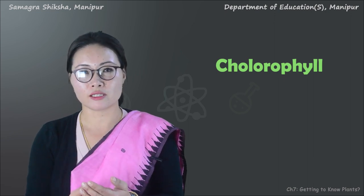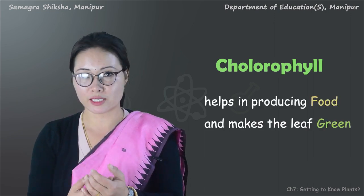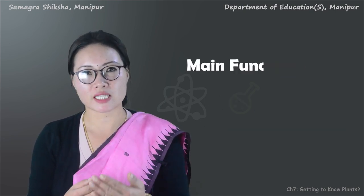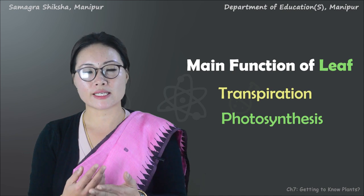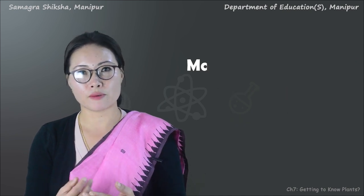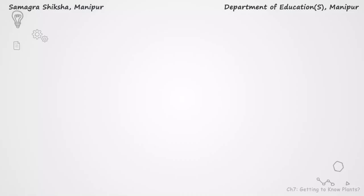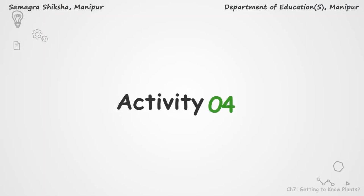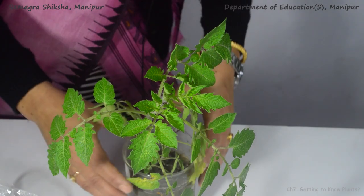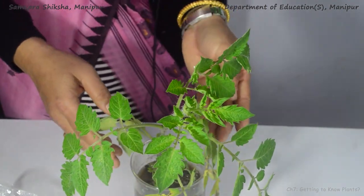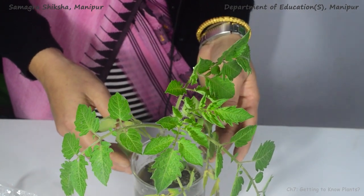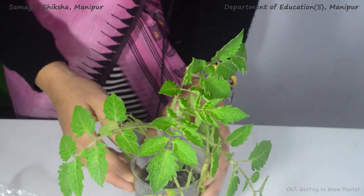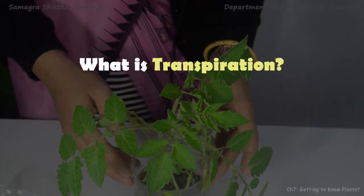So the main basic functions of the leaf are transpiration and photosynthesis. The activity of the leaf includes transpiration — the loss of water vapor to the atmosphere.